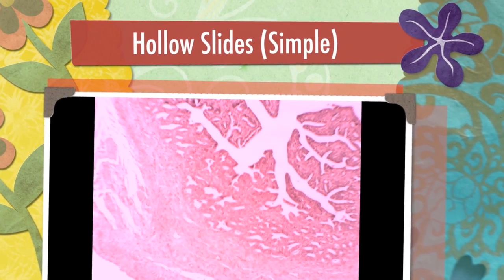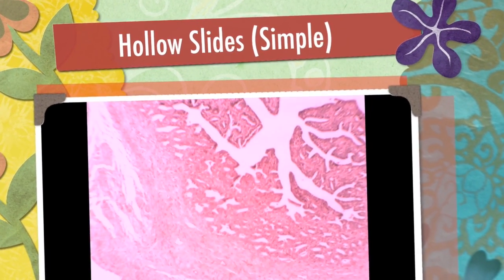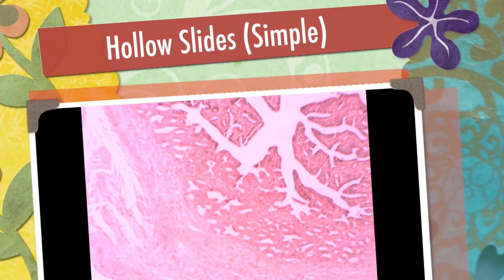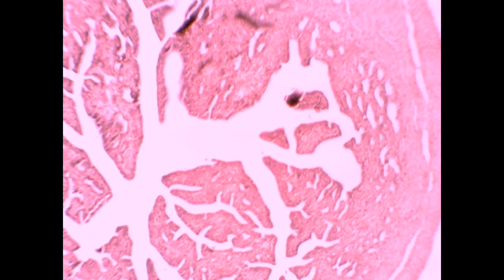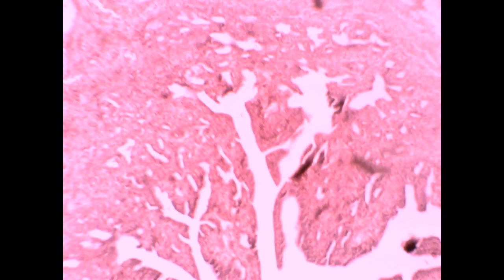This is a trial exam for the hollow slides. This is a small or moderate-sized luminal organ with a very characteristic branching of the mucosa and folding of the mucosa with surrounding connective tissue. This is fallopian tube.